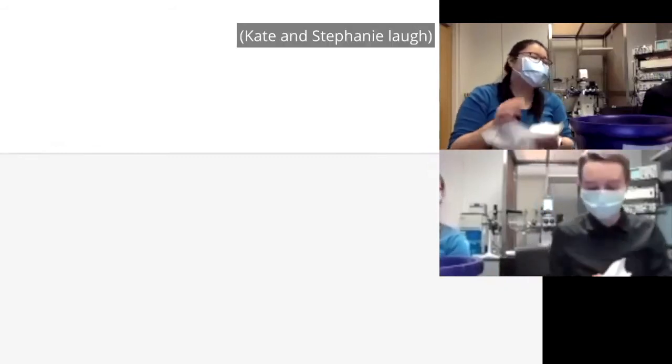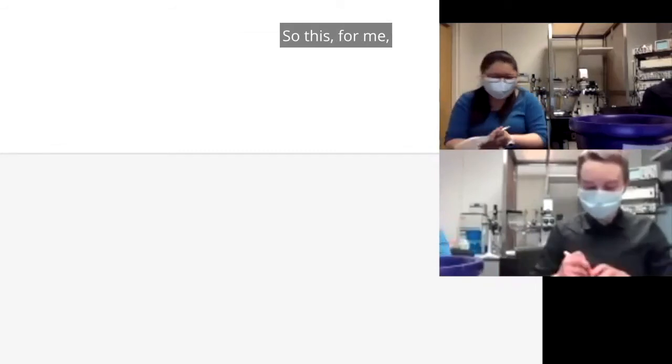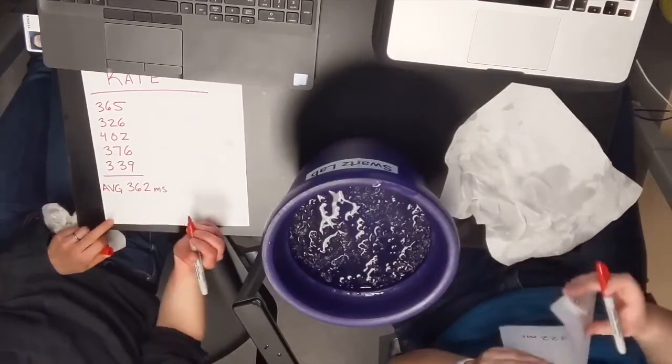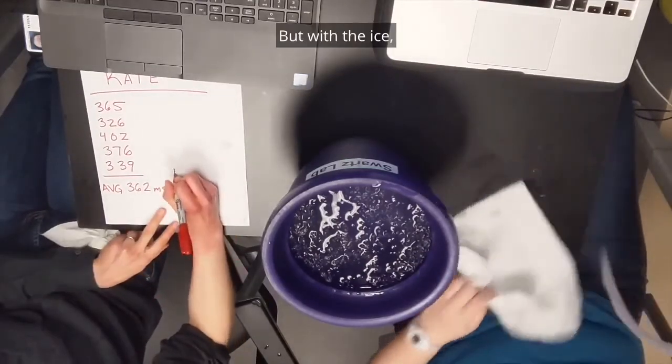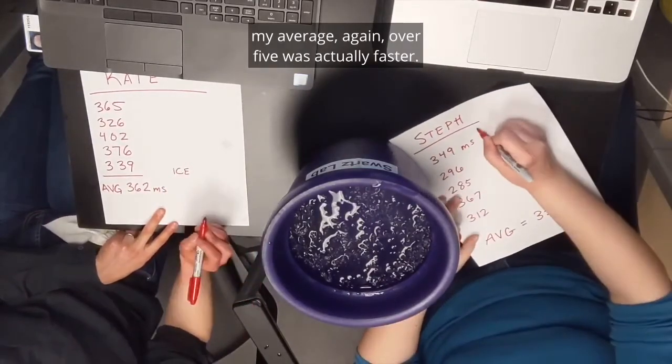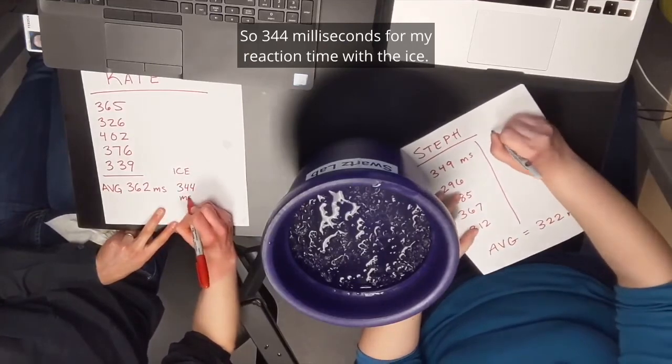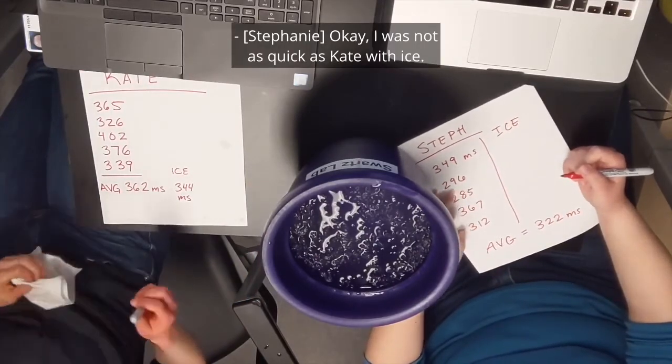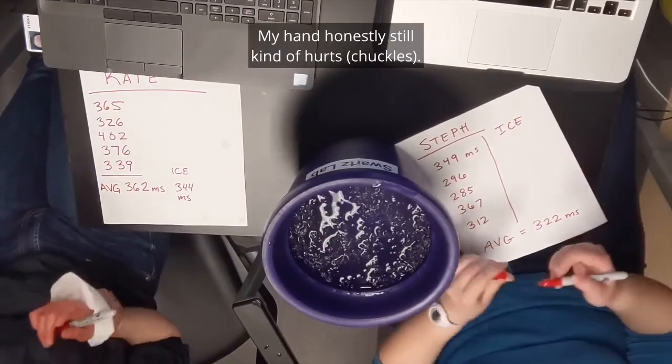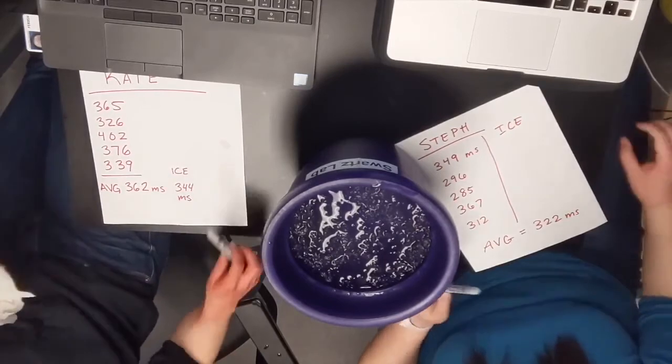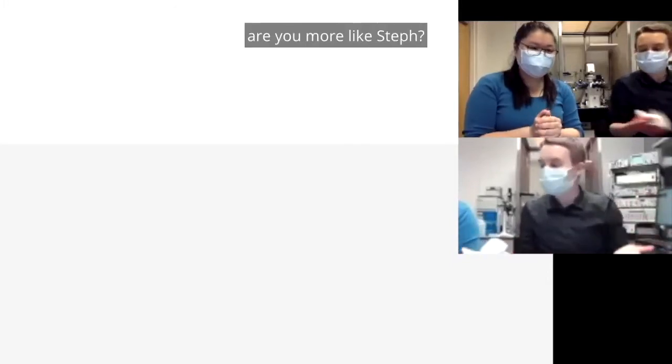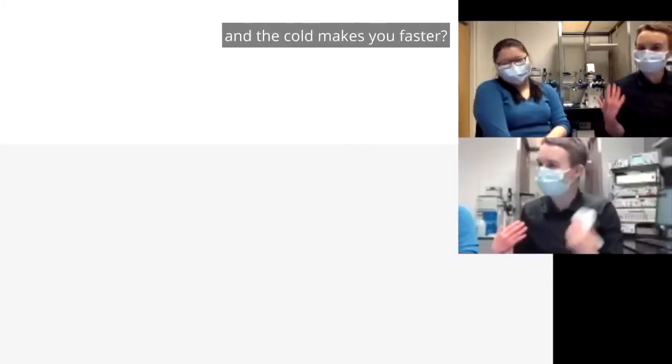So for me, my average over five for the normal was 362 milliseconds, but with the ice, my average over five was actually faster—344 milliseconds for my reaction time with the ice. I was not as quick as Kate with ice. My hand honestly still kind of hurts, but my average was 488. That's a lot slower than last time. So the question for you is, are you more like Steph? Does the cold make you slower? Or are you more like me? And the cold makes you faster.